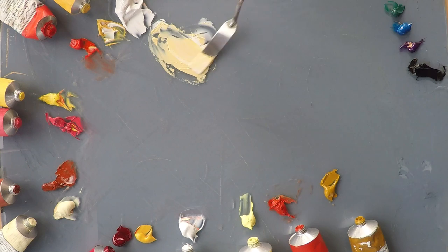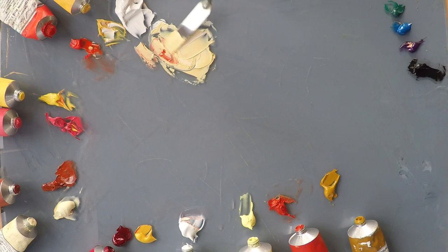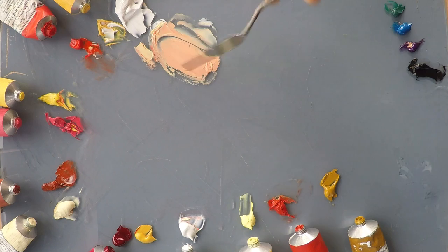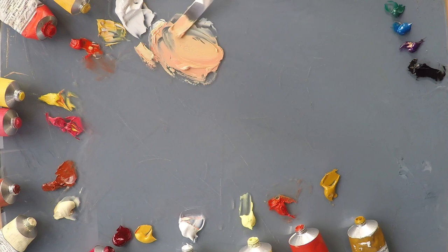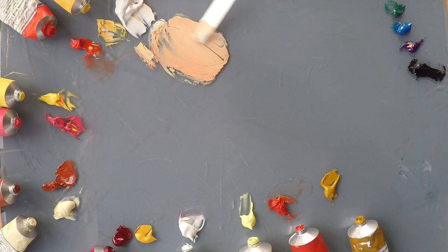And to warm that up we'll try a tiny spot of cadmium red light. It's working but I think that's a little bit clean for a flesh tone for me. I want to just soften it down a tiny bit, desaturate it a little. A bit more white will help with that.